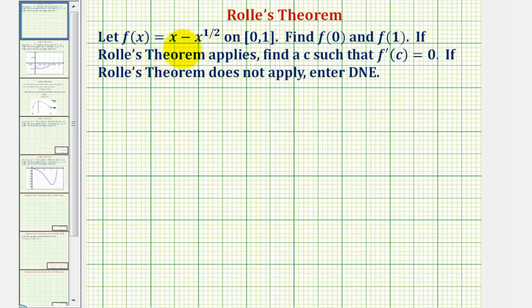We're given the function f(x) = x minus x to the one-half on the closed interval from zero to one. We want to find f(0) and f(1), which would be the function values at the endpoints of our interval.